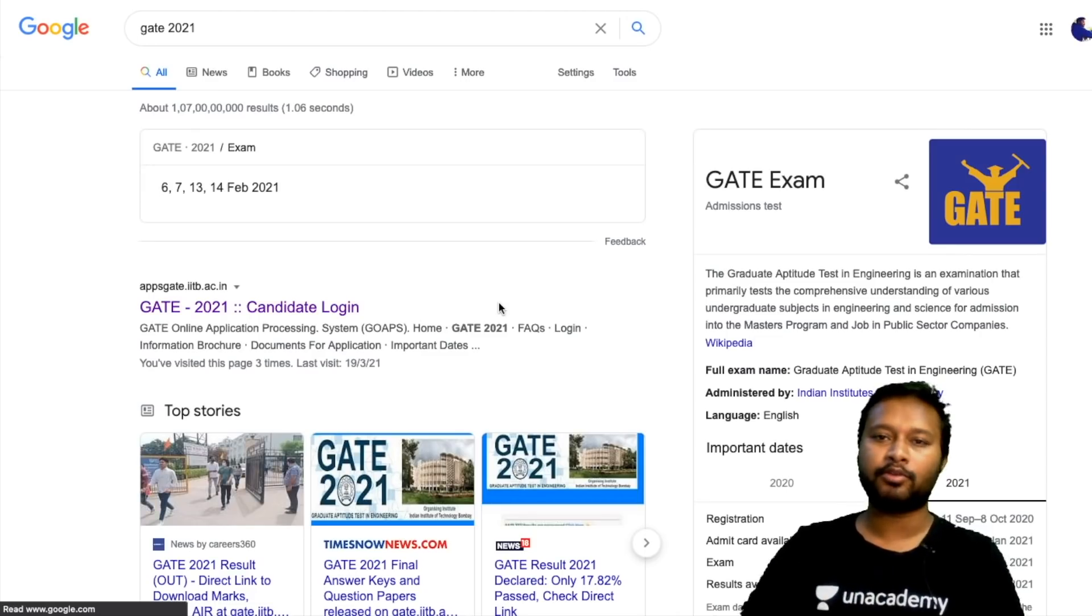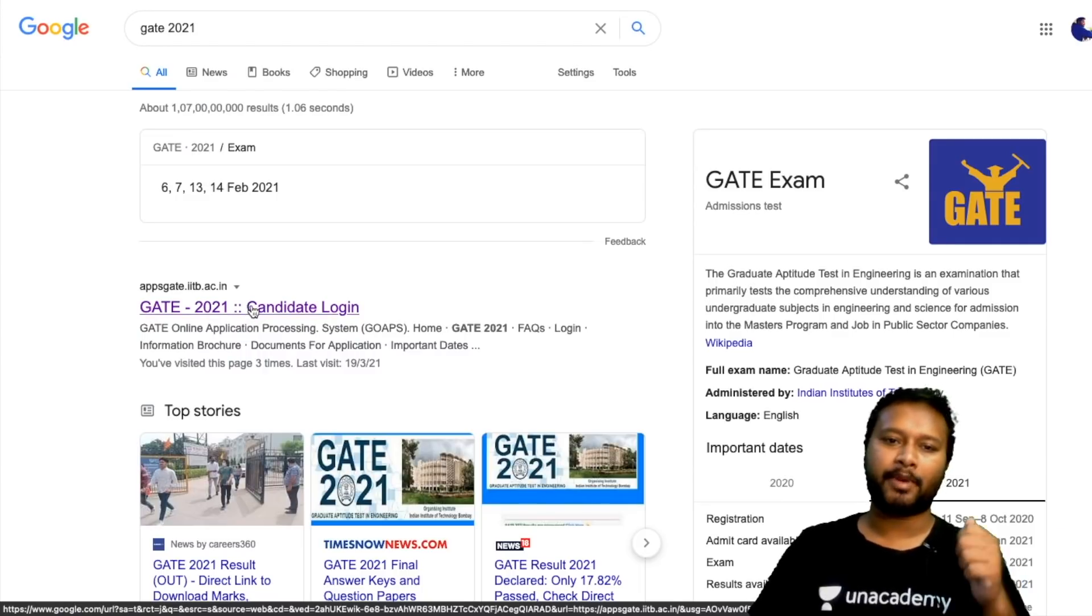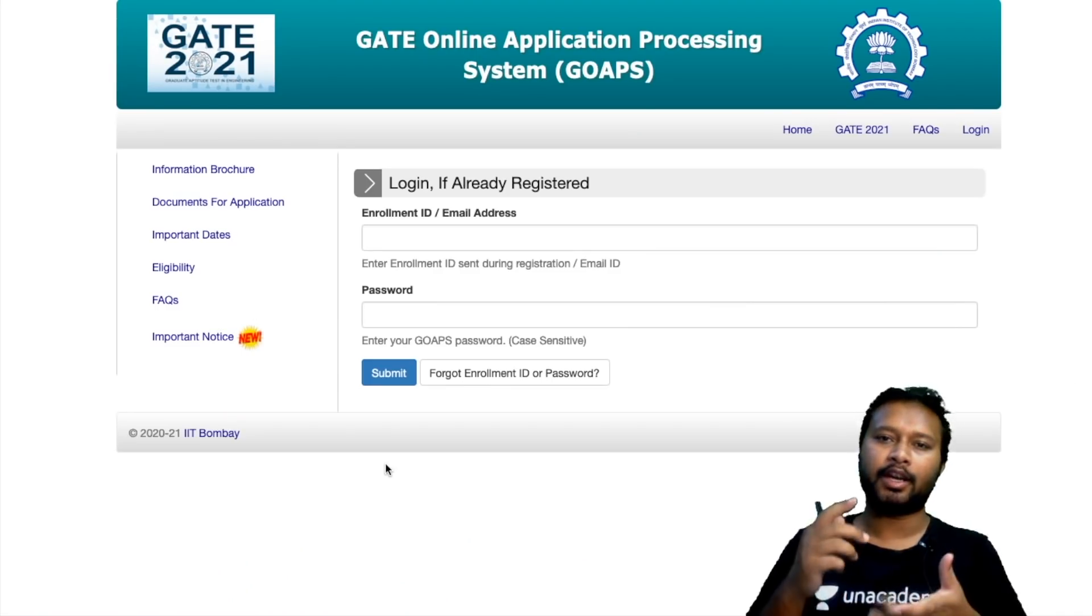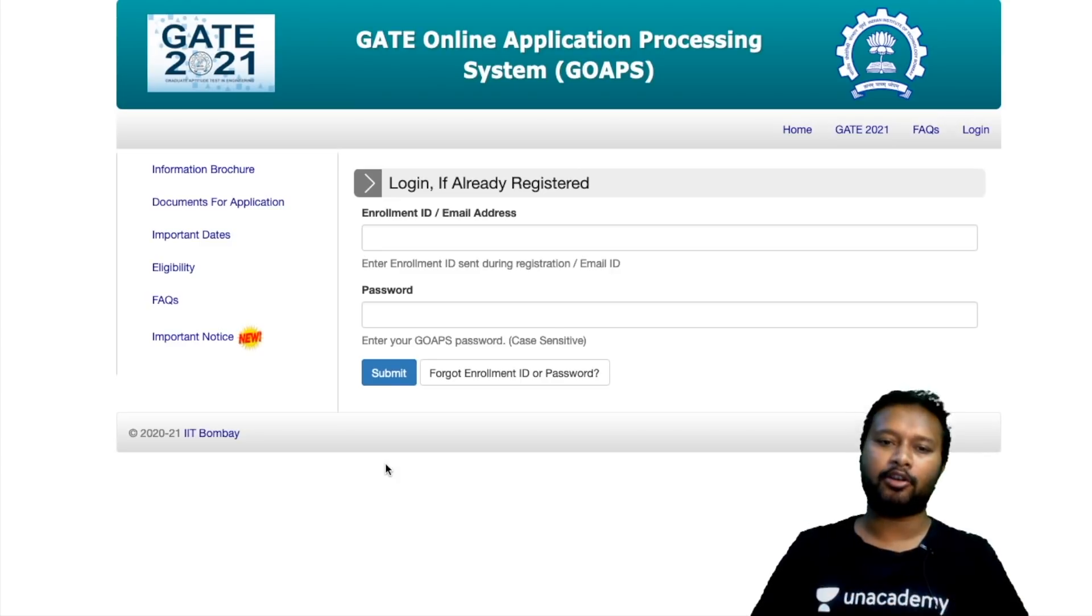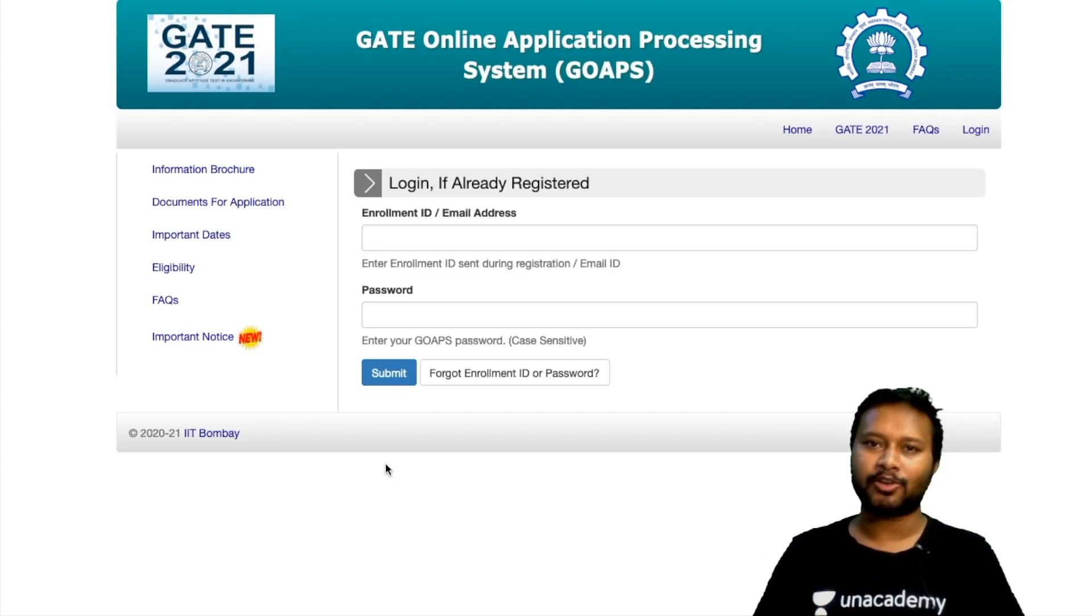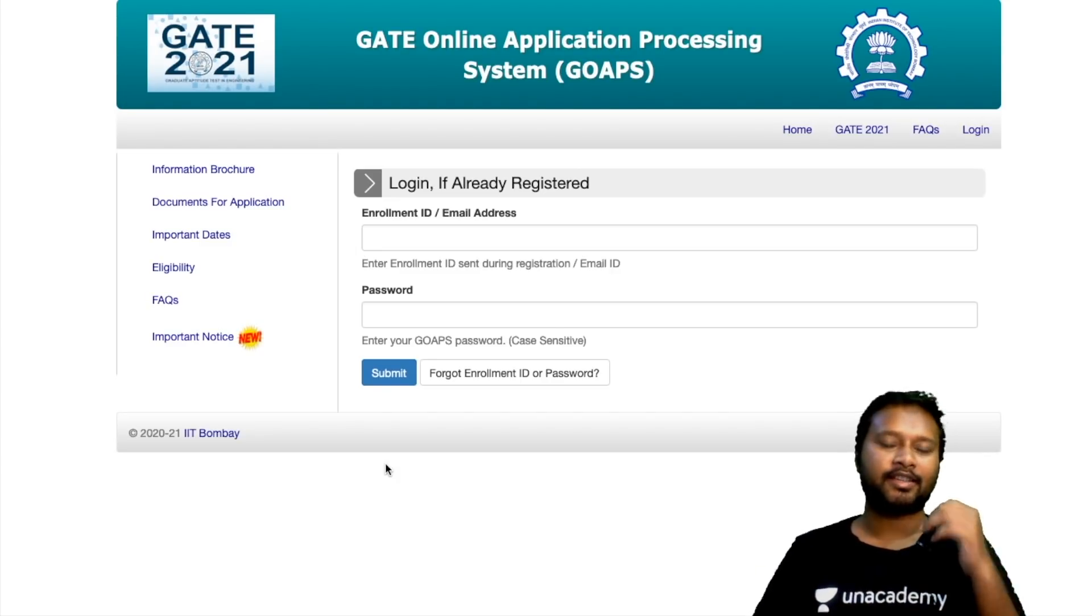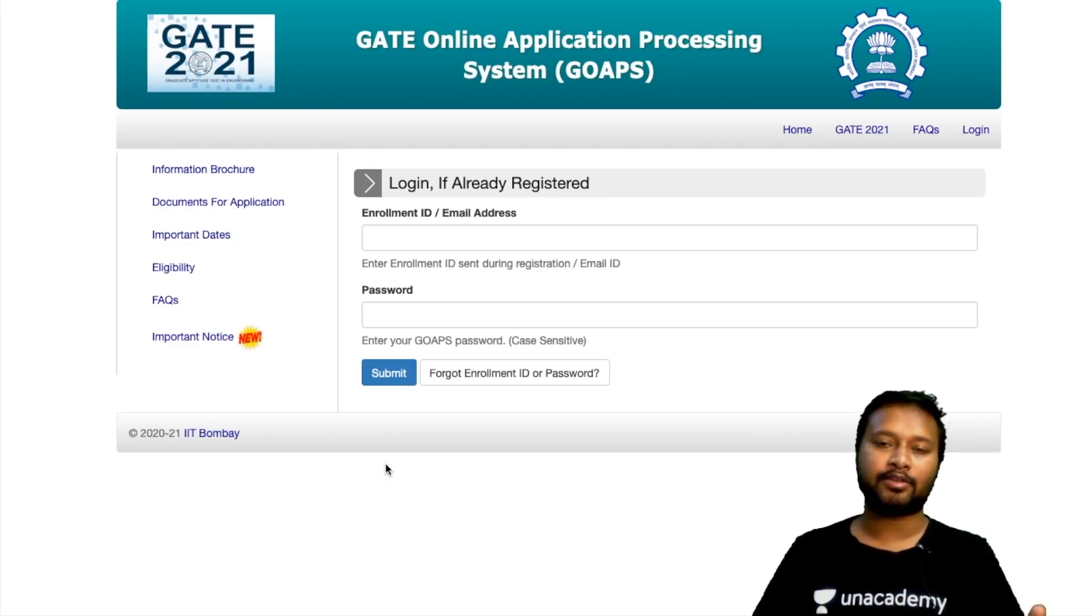Or you can reach out through the link given in the description of this video. You have to go to the candidate login page and after putting your email ID and password, after logging in, you will be able to see your result - whatever result you have got, the score will be there, the GATE score.